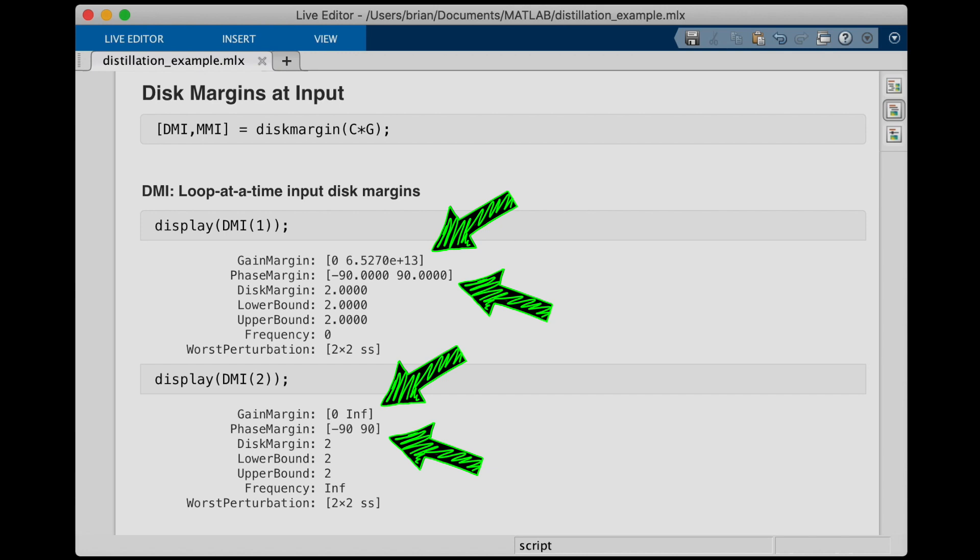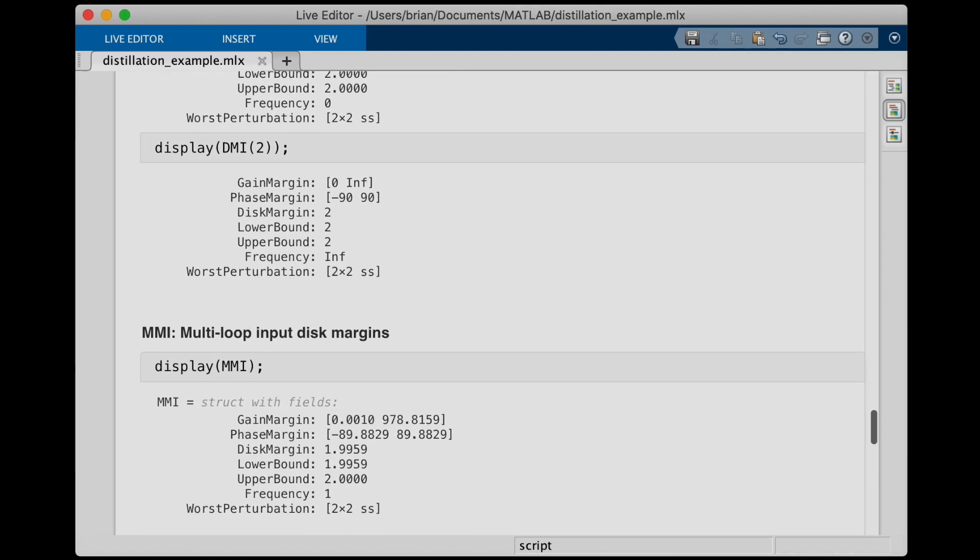And it turns out that the multi-loop input disk margin is about the same. The gain margin is almost infinite and there's almost 90 degrees of phase. And this tells me that our system is pretty robust to input variations, even simultaneous variations, which again makes sense because the two separate channels were decoupled from each other with the inversion controller.